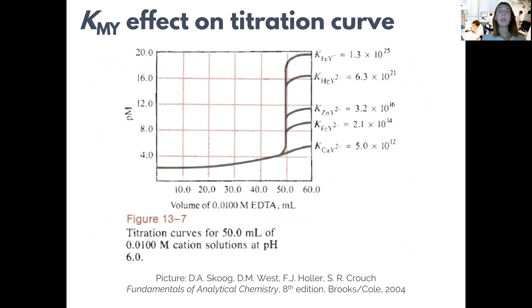Let's visually see what is the effect of the formation coefficient from an example from Skoog and West analytical chemistry book. Here is a titration curve for the complex formation for different metals with EDTA. On the y-axis, we have the minus logarithm of the metal cation concentration.